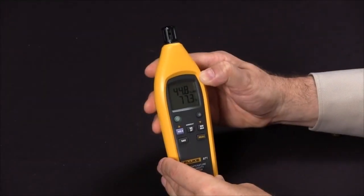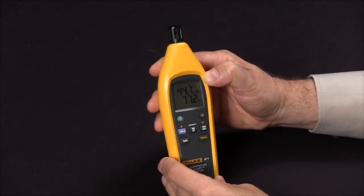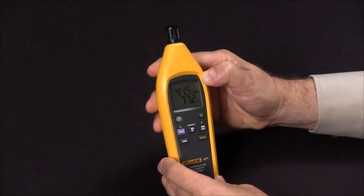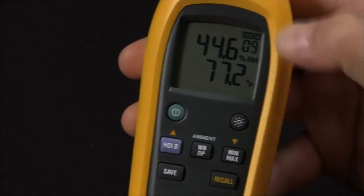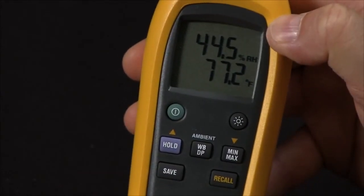Another key feature of the 971 is that you can store up to 99 readings. To save the reading, simply press the save button, and the numerical sequence will be assigned to that reading.